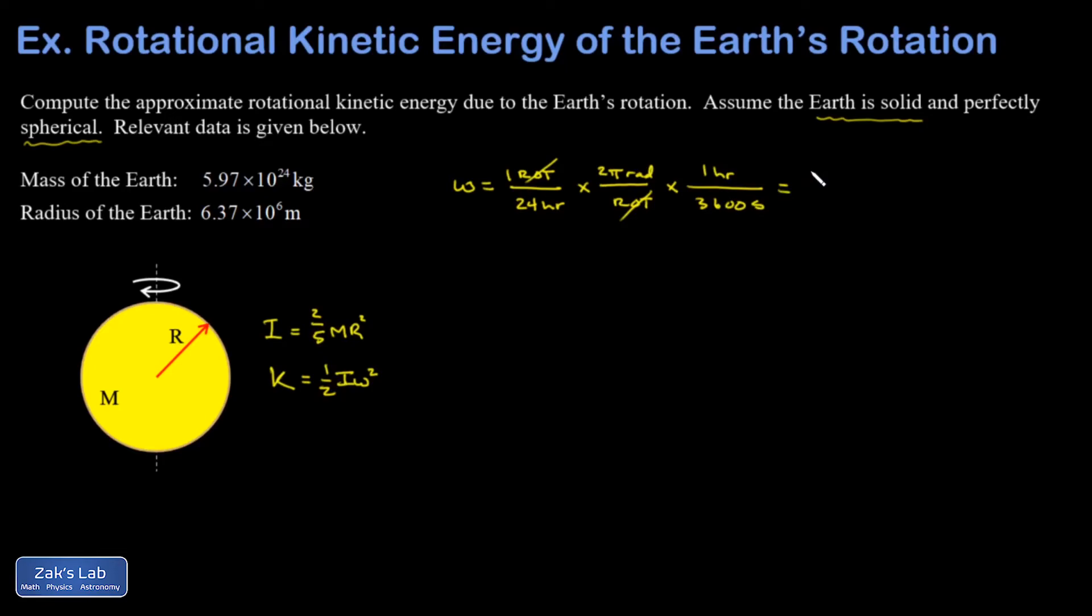And one hour is 3,600 seconds. 60 minutes per hour multiplied by 60 seconds per minute. So my hours cancel. And I end up with 7.27 times 10 to the negative-fifth radians per second.